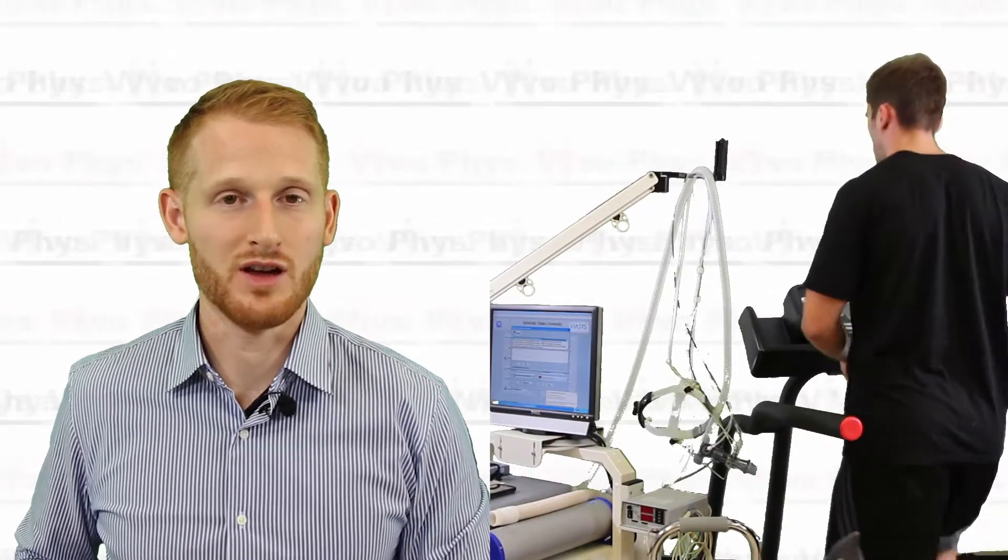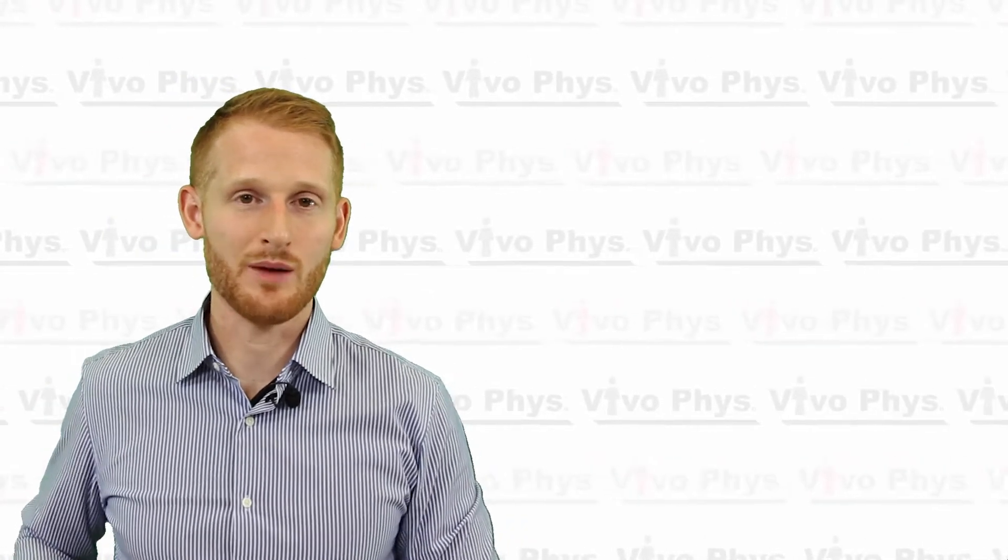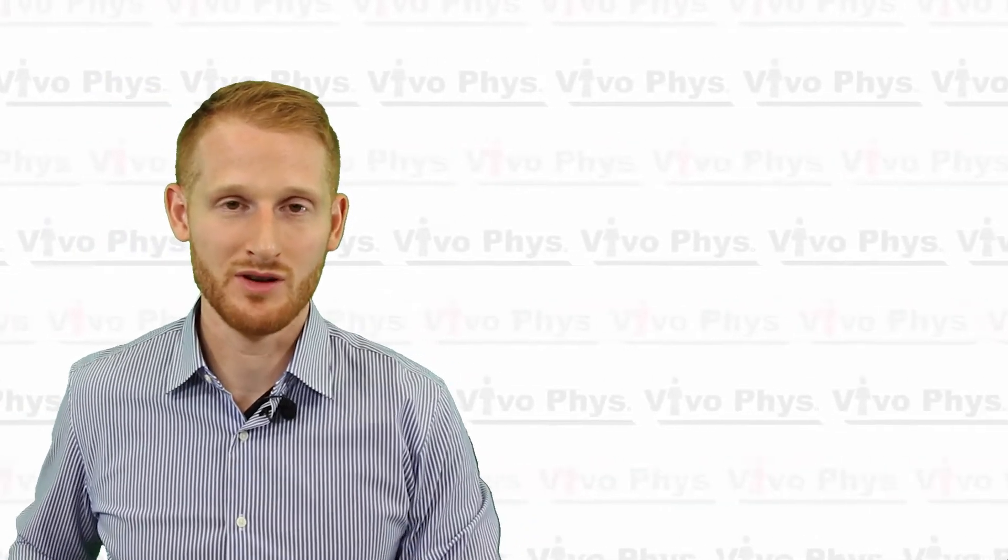Once they are ready and you've confirmed that any of the measurements you've been doing throughout the test—like heart rate, blood pressure, if you're doing ECG—make sure all those return to near baseline levels. Then you can stop them and get them off the treadmill and have them sit down and watch them for a little while to make sure that they're okay.